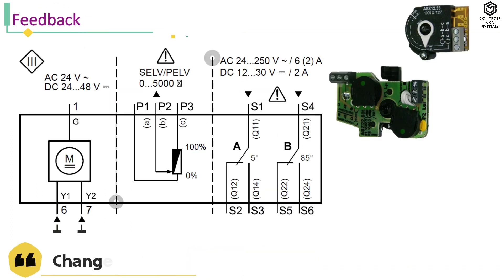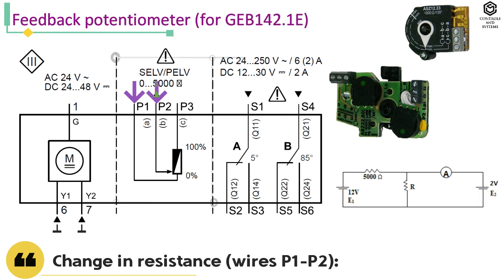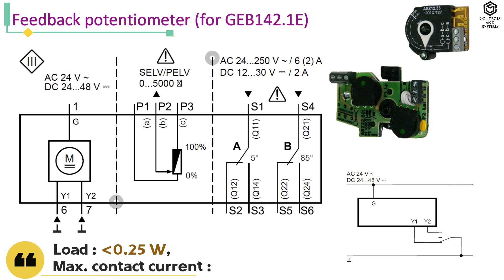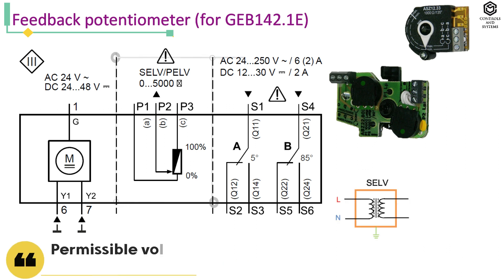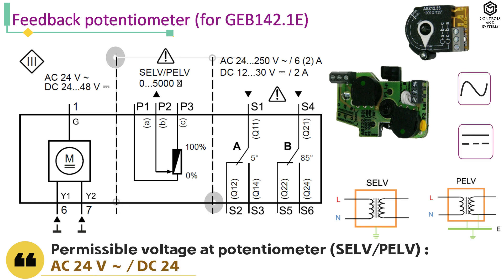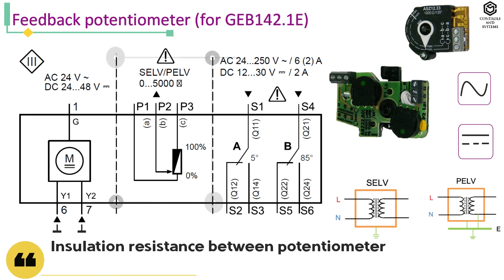Outputs — feedback potentiometer: change in resistance between wire terminals P1 and P2 is 0 to 5000 ohm, load is less than 0.25 watt, maximum contact current is less than 0.1 milliamps. Permissible voltage at potentiometer is AC 24 volt or DC 24 to 48 volt. Insulation resistance between potentiometer and housing is AC 500 volt.